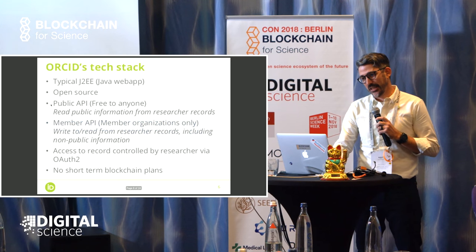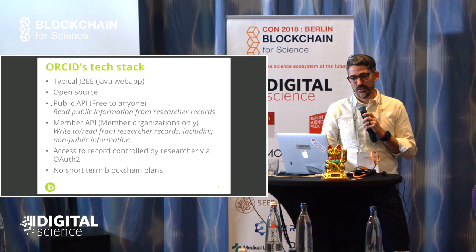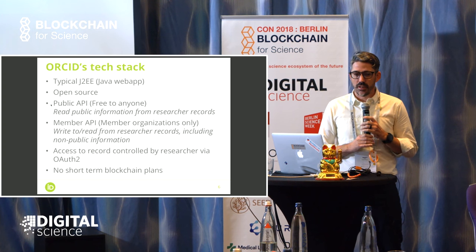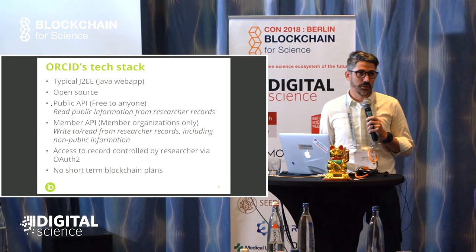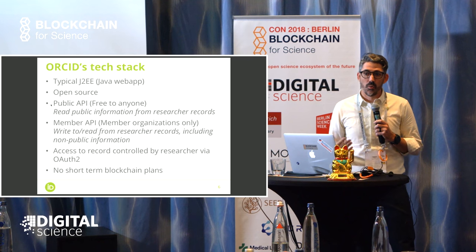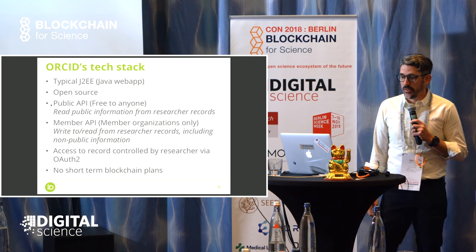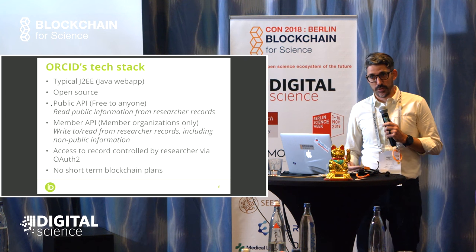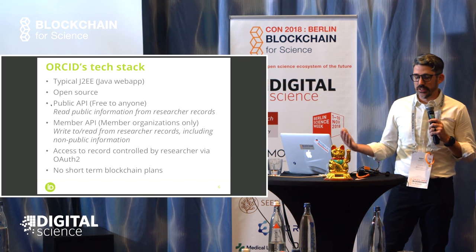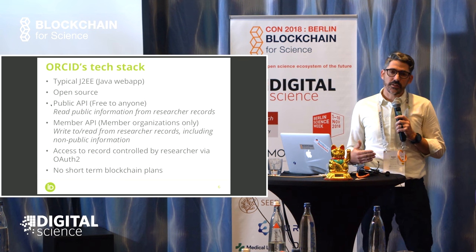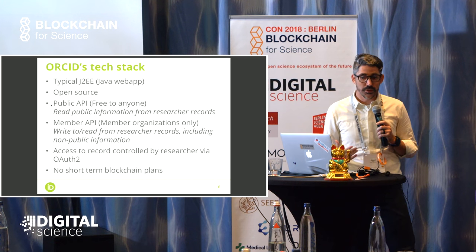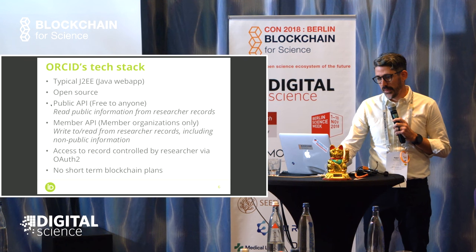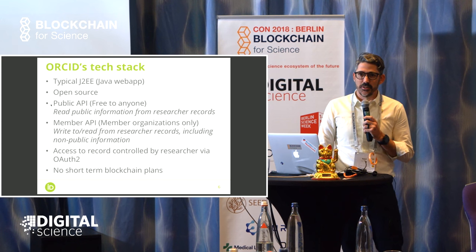The technology — this is going to get exciting. The ORCID tech stack. We are a typical Java web app, J2EE. This is a term that was popular 10 or 20 years ago. The good news is we're open source. We have a public API that's CC0, so any information the researcher chooses to share becomes CC0, and the researcher controls what information they share. We have a member API that allows our members to write to the API and adds a few other things, like some information that the researcher may want to share with our membership and not the public, and convenience features like webhooks. Access to the record is controlled by the researcher — they give permission to our members to read the record or push information in the record. That's via OAuth2. And finally, no short-term blockchain plans.